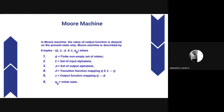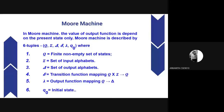Now we move on to the Moore machine. In a Moore machine, the value of the output function depends on the present state only. The Moore machine is described by six tuples: Q, the finite non-empty set of states; the set of input alphabets; the set of output alphabets; lambda, the output function mapping Q to the output set; and Q0, the initial state.